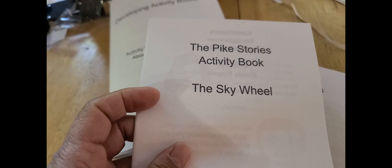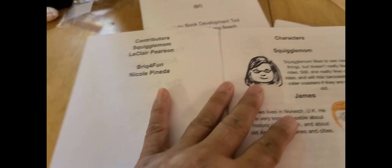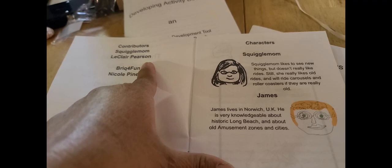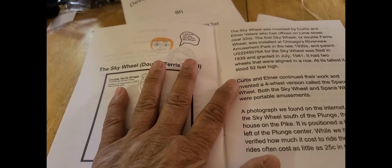And we have the contributors and we have characters in it. LeClaire should also be in here, but he hasn't created his drawing yet. But we have me, Squiggle Mom, and James, who lives in Norwich in the UK. James is very knowledgeable about historic amusement zones all over the world.